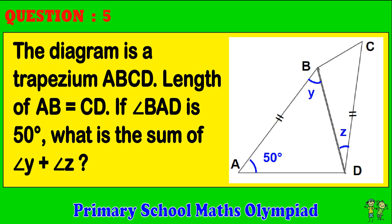Question 5. The diagram is a trapezium ABCD. Length of AB equals CD. If angle BAD is 50 degrees, what is the sum of angle Y plus angle Z?